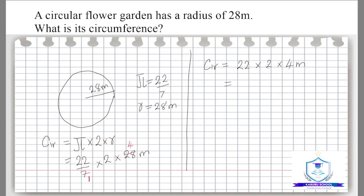So in this case, 22 multiplied by 2 gives us 44, then this multiplied by 4 meters to get the total circumference. So 44 multiplied by 4, we get 176 meters.